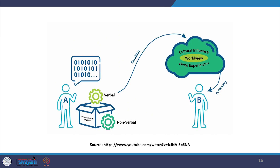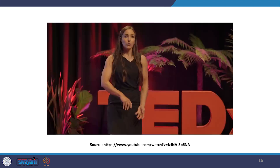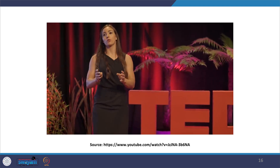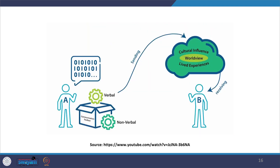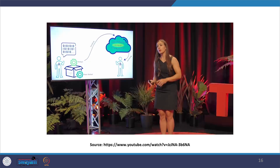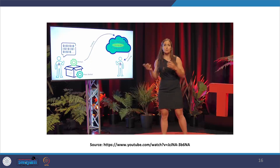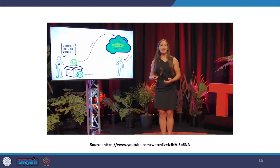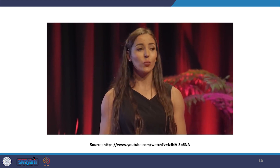When Person A communicates, they encode their message into verbal and non-verbal signals, which are then sent to Person B and filtered through the lens of Person B, where they are recoded to reconstruct the message. But because of the filtering process, the message that arrives can be highly distorted. And as this process goes back and forth, the likelihood of invisible misunderstandings mounts. They are called invisible because in many cases, one or both communication partners are unaware that it is even happening.